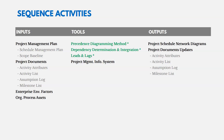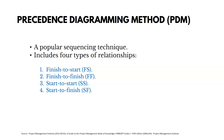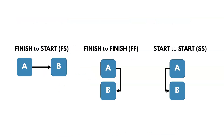The tools include the Precedence Diagramming Method (PDM), dependency determination, and leads and lags. PDM documents four types of relationships: finish-to-start, finish-to-finish, start-to-start, and start-to-finish. Here's what those might look like on a network diagram.